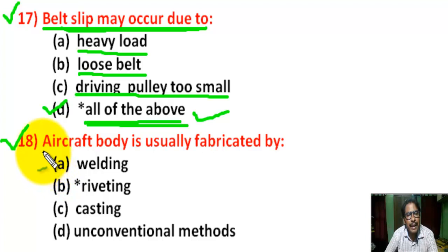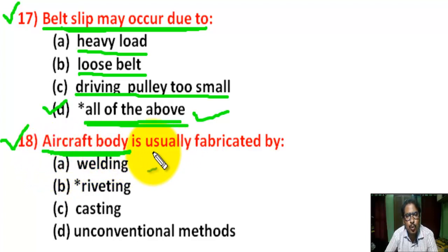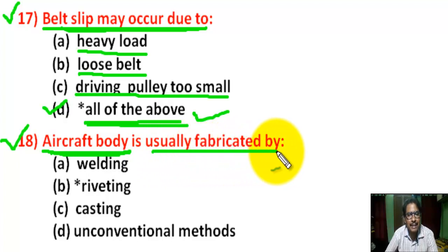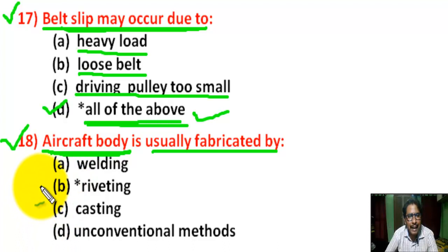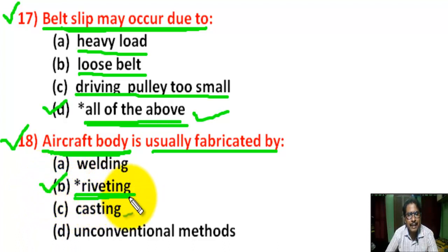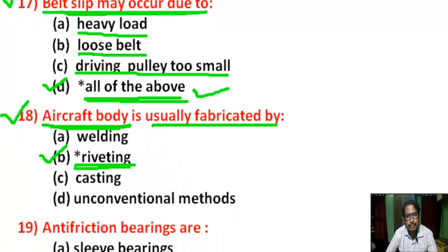Question number 18: an air vessel body is usually fabricated by — there are 4 options. Correct answer is B: Riveting.